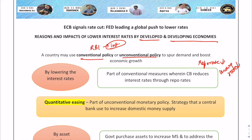As interest rates go down overall, the demand for loans increases and thus economic activity and growth enhances. The repo rate is the rate at which RBI lends money to commercial banks.